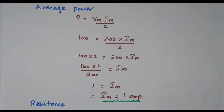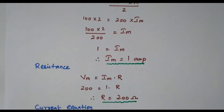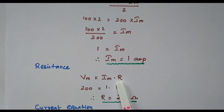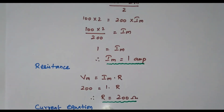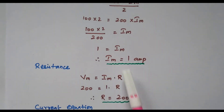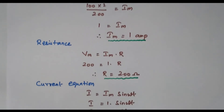From the current, we can calculate the resistance. Using Ohm's law, Vm = Im × R: 200 = 1 × R, so R = 200 ohm. We have now calculated the resistance value.